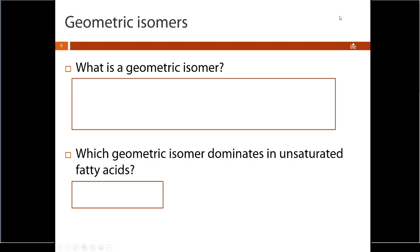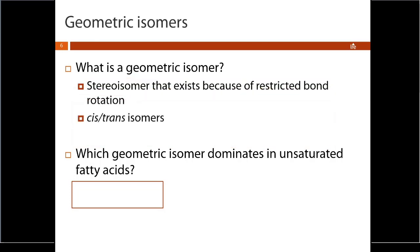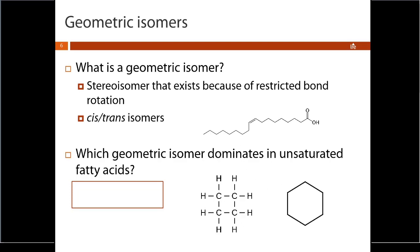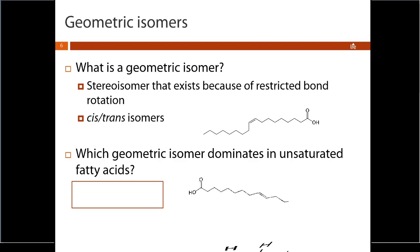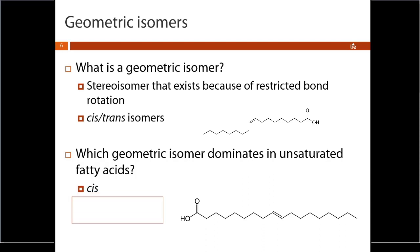At the beginning of this course we talked about geometric isomers. A geometric isomer is a subset of stereoisomer that exists because of restricted bond rotation — we saw this with double bonds and cyclic alkanes. Since many fatty acids have double bonds in the tail, they can exist as the cis isomer or as the trans isomer. Fatty acids in nature are almost always going to exist as the cis isomer.